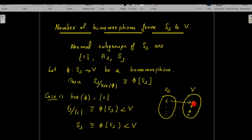Case 1: kernel of φ = {ι}. Only the identity ι in S₃ maps to e in V. By the Fundamental Homomorphism Theorem, S₃/{ι} is isomorphic to φ(S₃), which is a subgroup of V. Since S₃/{ι} is isomorphic to S₃ itself, we need S₃ to be isomorphic to a subgroup of V. However, S₃ has 6 elements and the Klein 4-group has no subgroup of order 6, so this case is impossible — there is no such homomorphism.